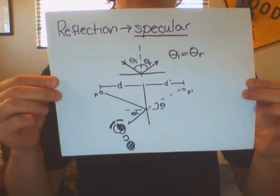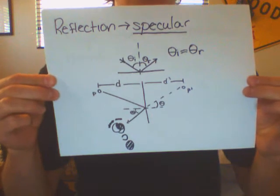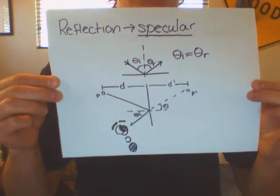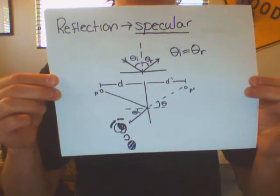When someone is looking directly at the reflected light, it appears that the light is coming from a source behind the mirror, which is d prime distance away at object p prime, where d prime equals d.